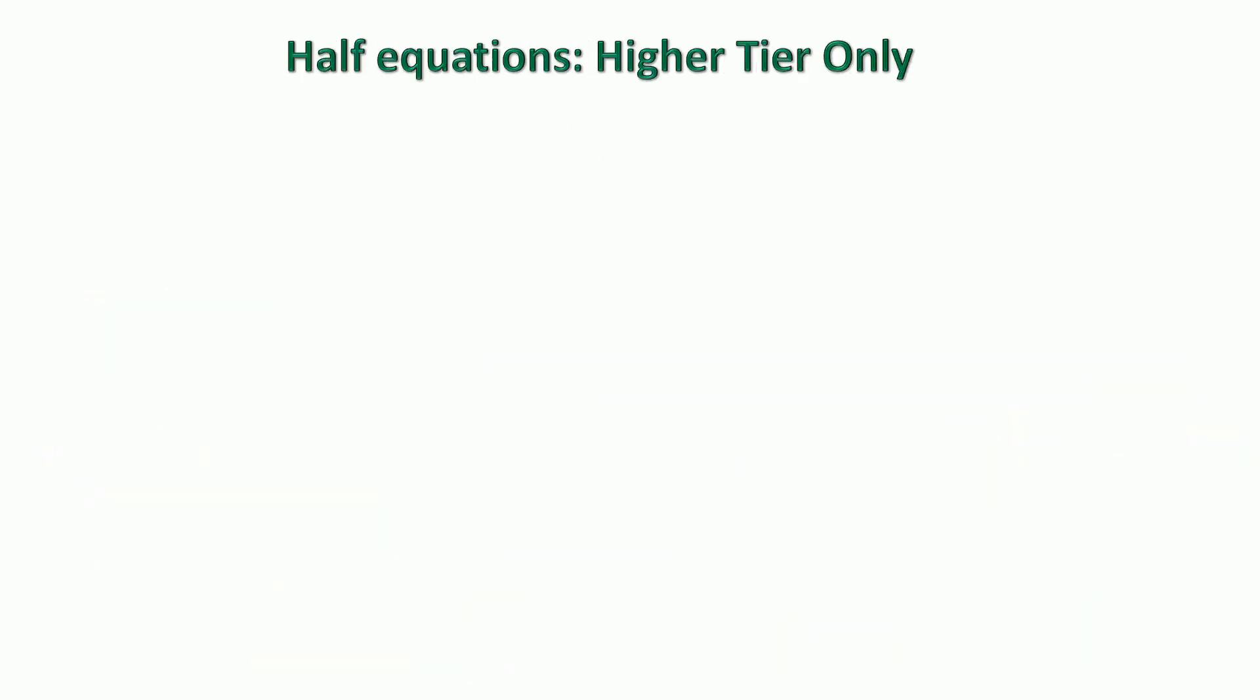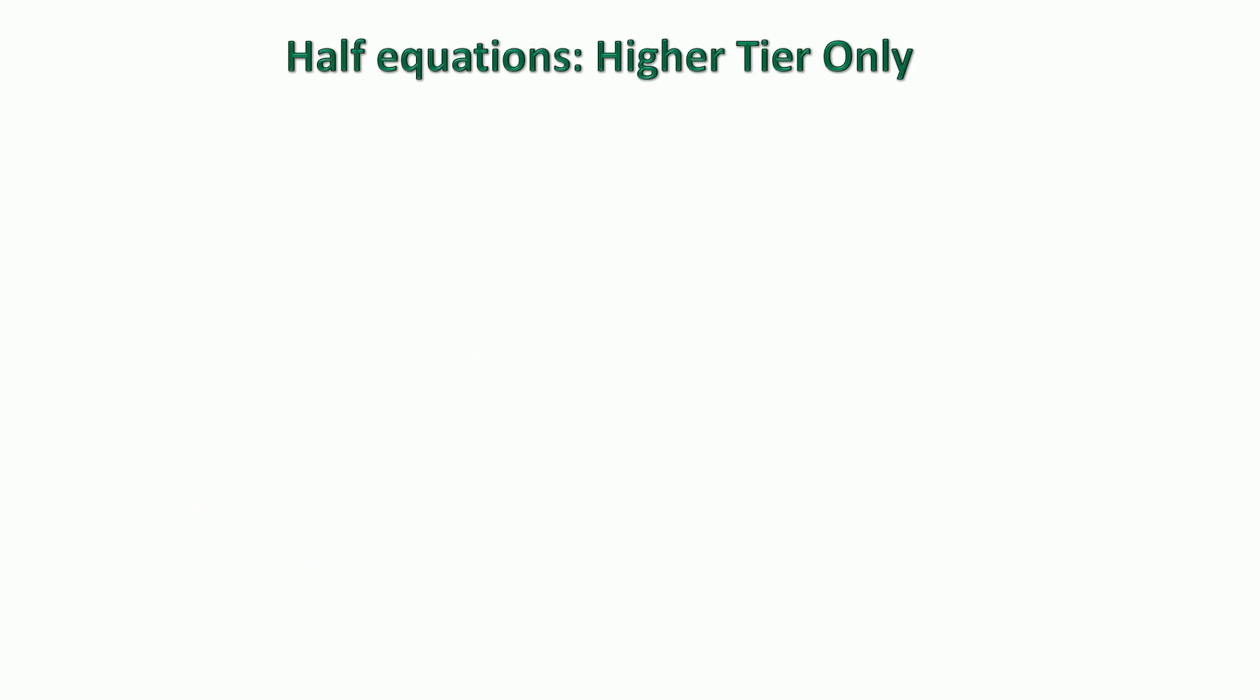This next section is just for higher tier students only and that's how to write half equations for what's happening at each electrode. Now the golden rule is during electrolysis ions change into atoms. So let's think about the example we've just considered which is zinc chloride.